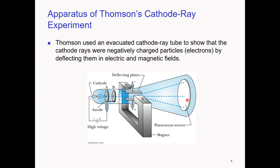Thomson used an evacuated cathode ray tube. He found that cathode rays were negatively charged particles. The cathode rays passed through regions of electromagnetic field in the tube.